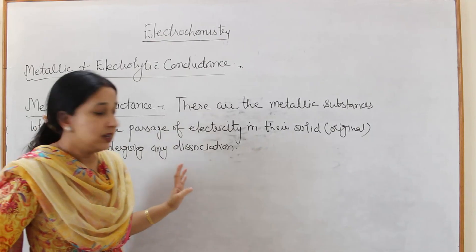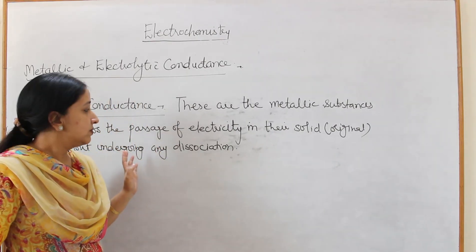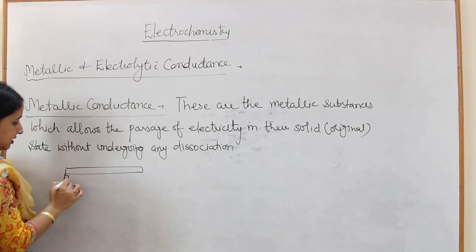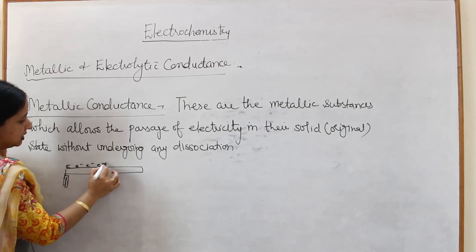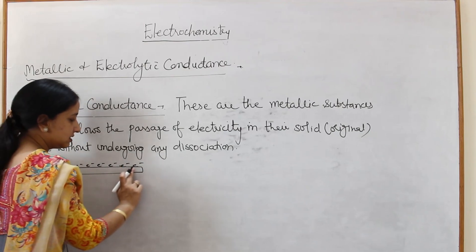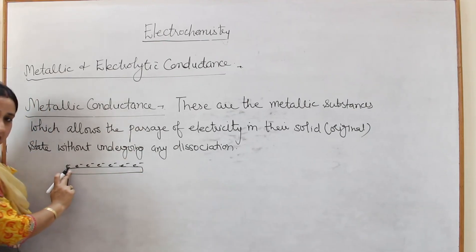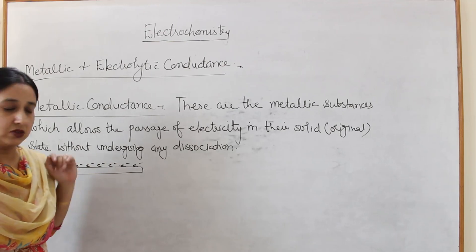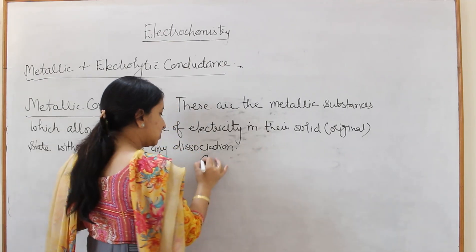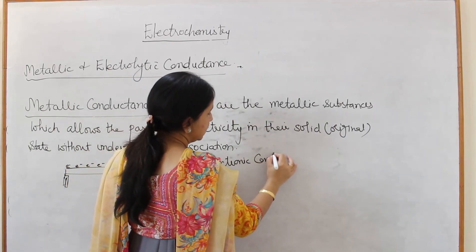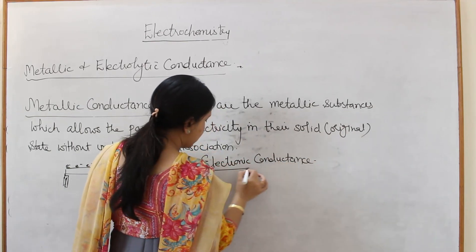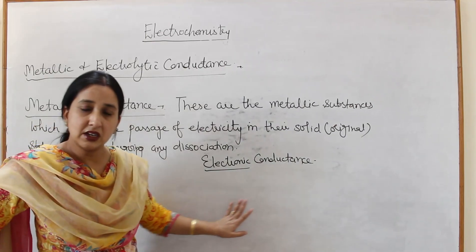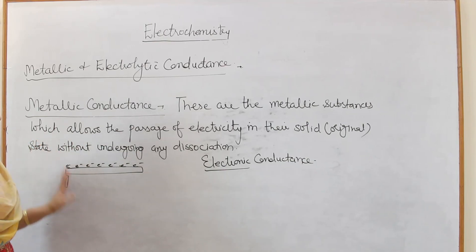In metals, electric current is due to the flow of electrons. If we take any wire and apply heat at one end, the electrons pass along further, and with the movement of electrons, electricity passes through the material. That is why metallic conductance is also known as electronic conductance — because this word relates to the flow of electrons.